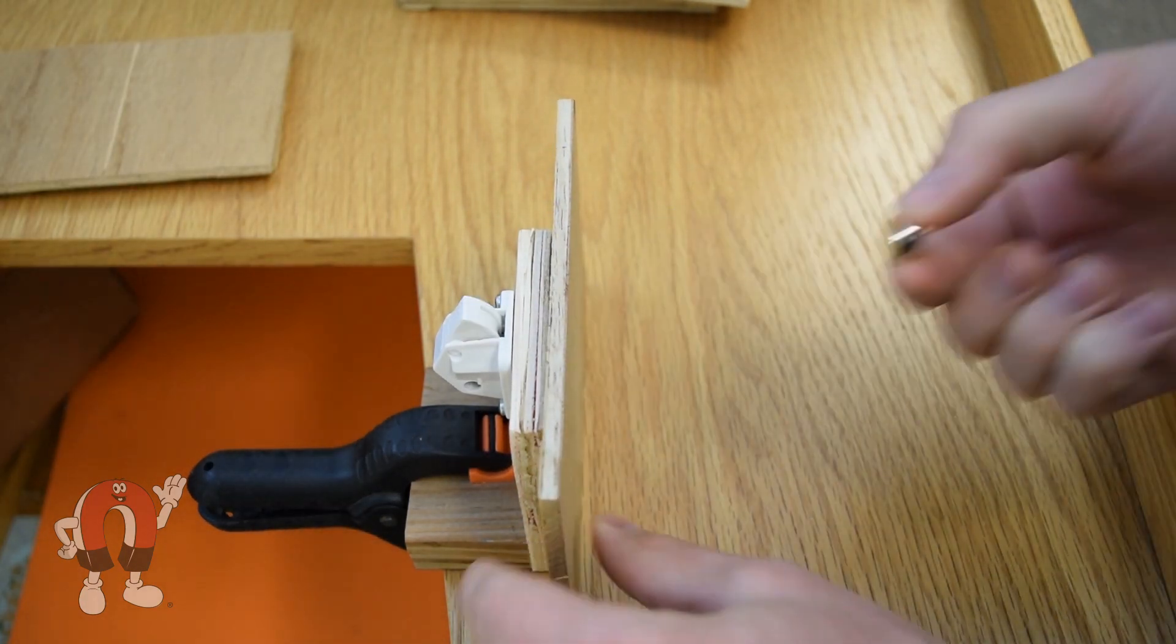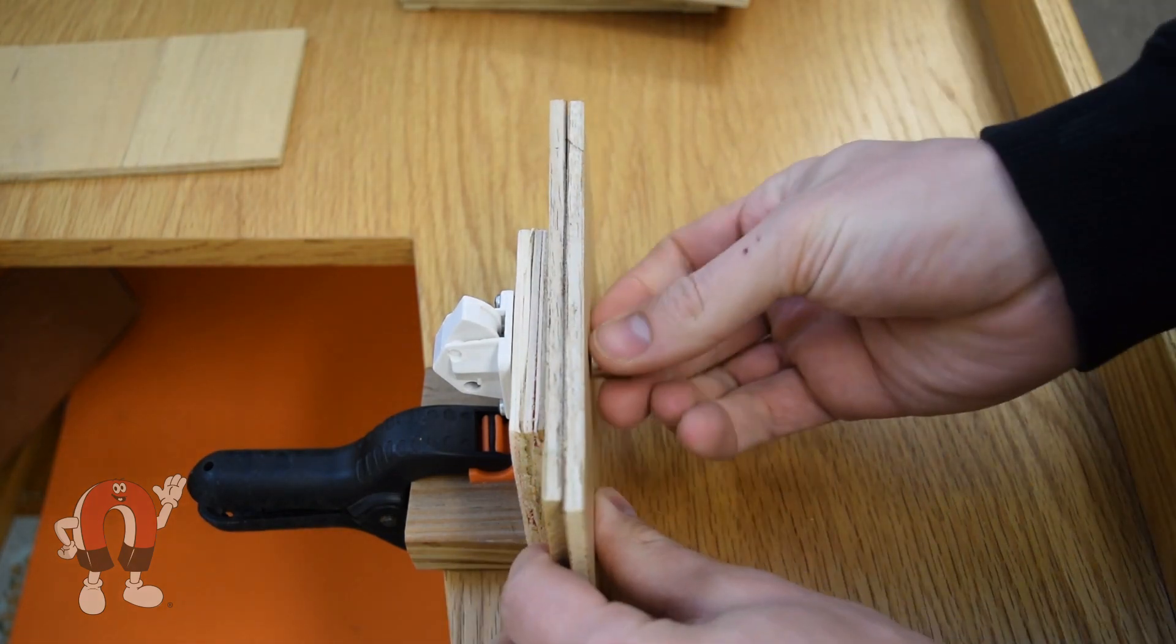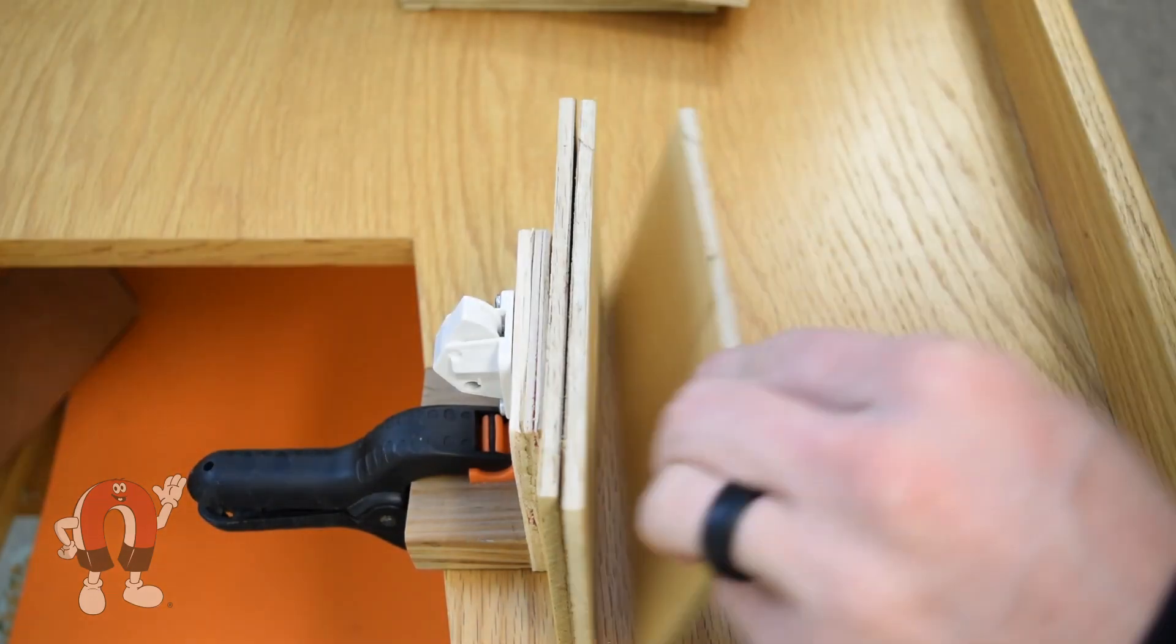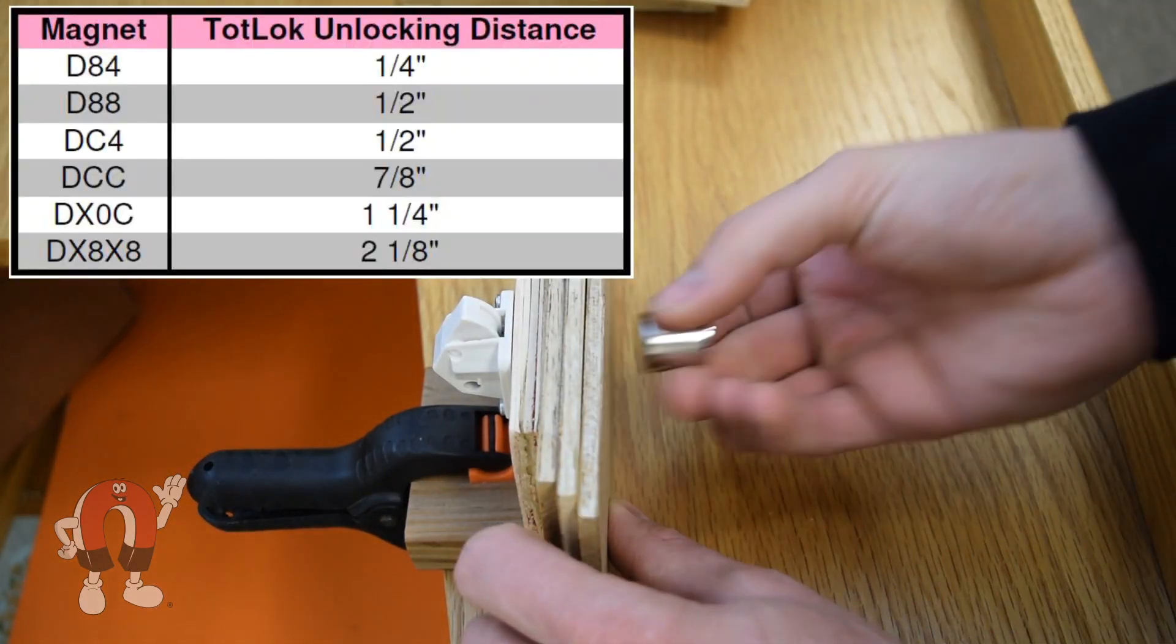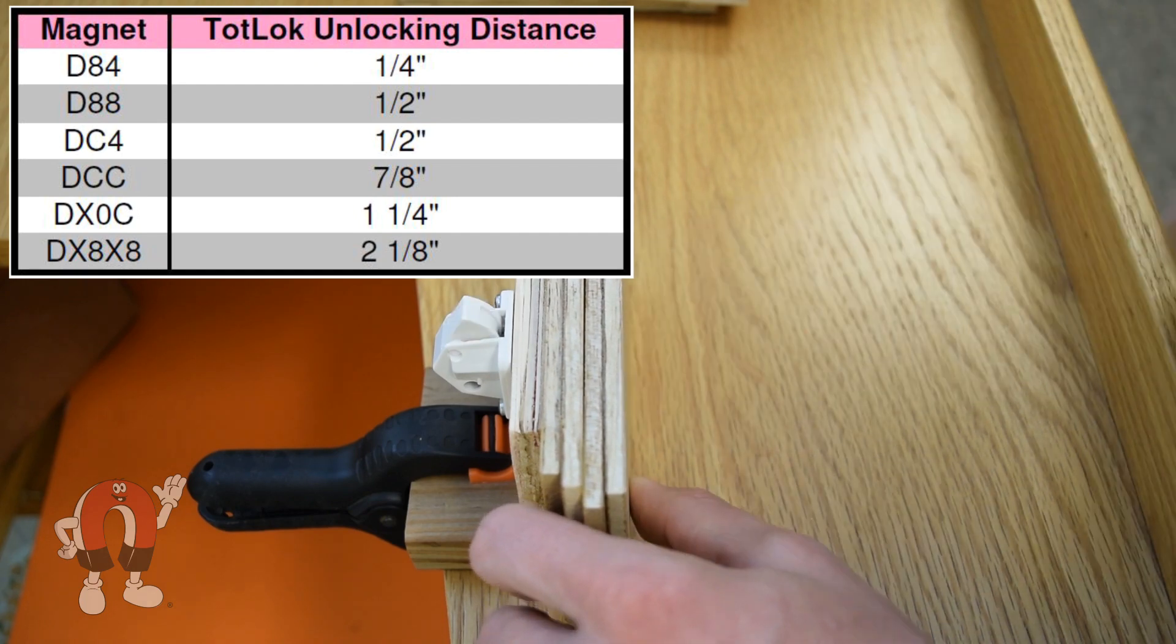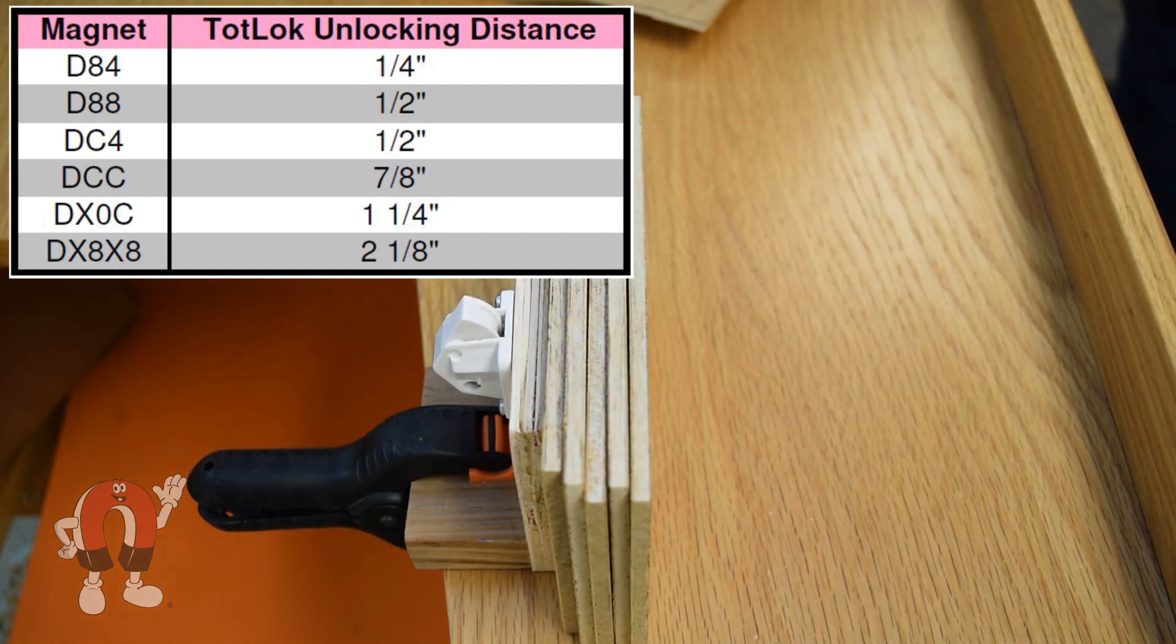Can you use stronger magnets to increase the distance? Definitely. We tested out several different magnets and distances. Here's a table of our results. A D88 would be good for a half an inch distance and a DCC for seven eighths thickness.